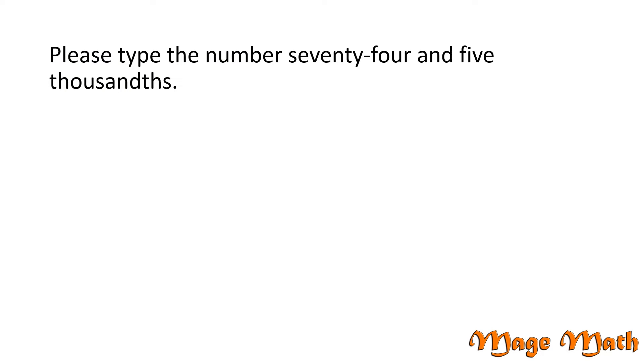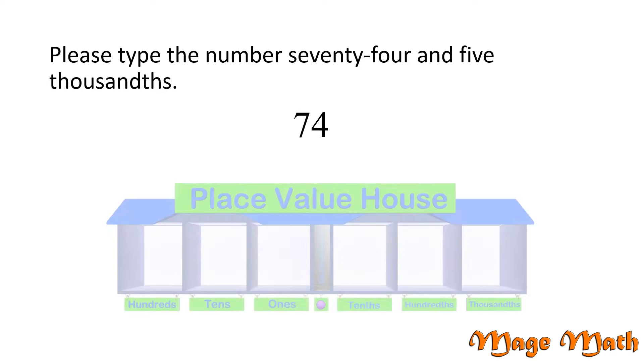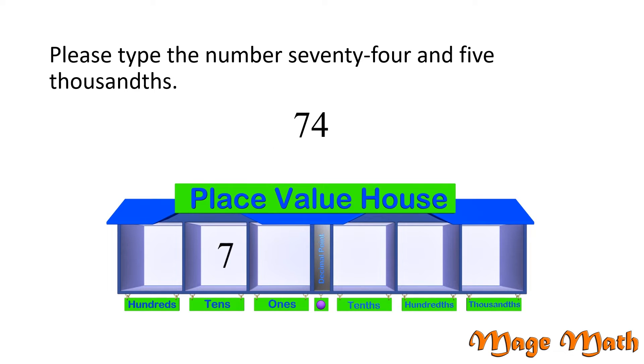Let's try a problem. Please type the number seventy-four and five thousandths. Seventy-four is written like this. The seven means that we have seven tens, and the four means that we have four ones. The word and is the word we say for the decimal point. So the numbers written in our sentence after the word and are the decimal numbers.